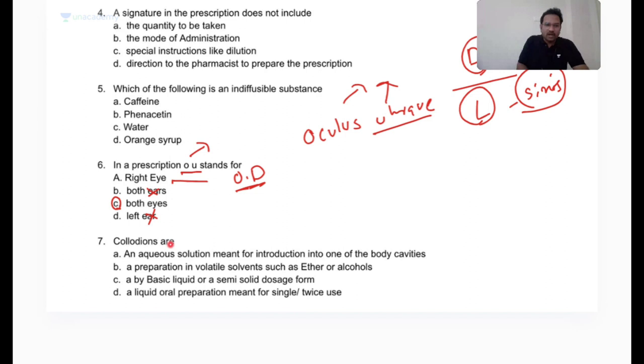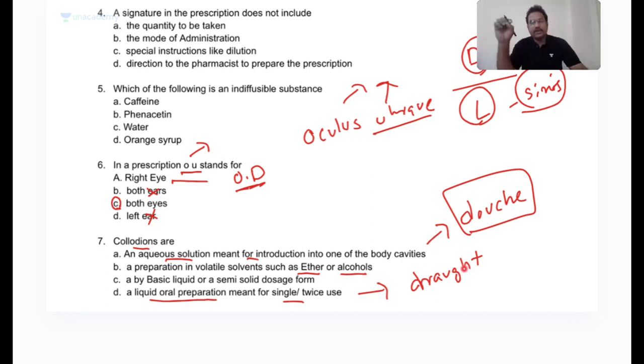Collodions are preparations containing ether and alcohol. A douche is an aqueous solution meant for introduction into one of the body cavities, especially female body cavities. A draught is a liquid oral preparation meant for single or twice use. These are all dosage forms you'll find in the syllabus.